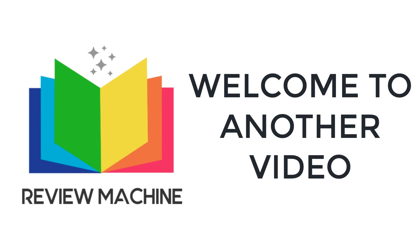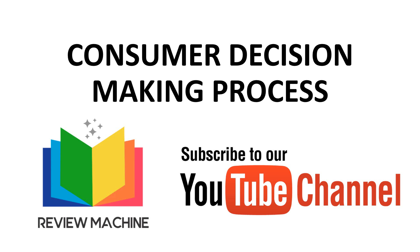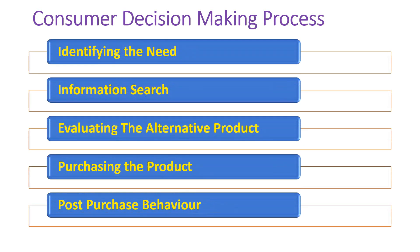Welcome to this video on the consumer decision-making process. Whenever a consumer is buying any product or service, they go through stages and then decide whether to buy the product or not. The four main stages are: need recognition, information search, evaluation of alternatives, and purchase decision. Apart from these four, there is a fifth stage — post-purchase behavior — which occurs after the purchase.